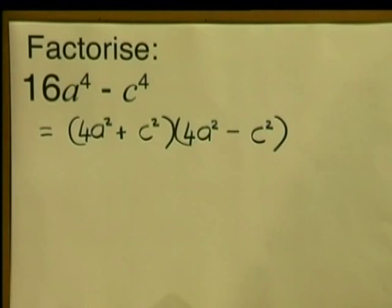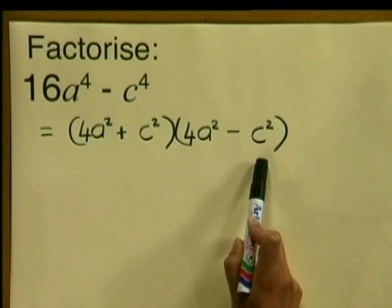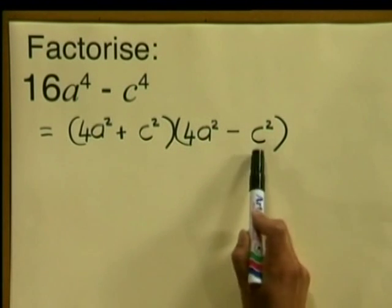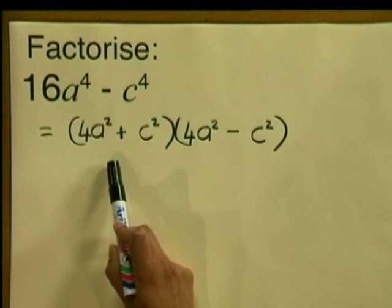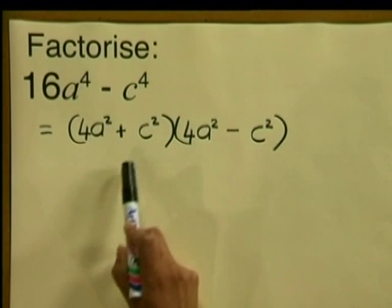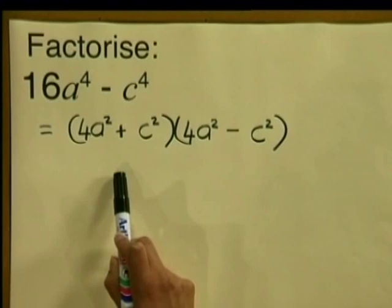But are we finished? Look again — look carefully at the second bracket. This is the difference of two squares again, so this bracket can still be factorized further. And the first bracket? This is the sum of two squares. Can the sum of two squares be factorized? It is not possible to write the sum of two squares as a product — in other words, that bracket cannot be factorized. But let's do what we can and factorize the difference of two squares.